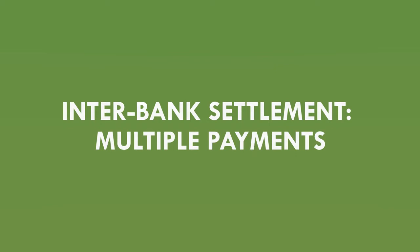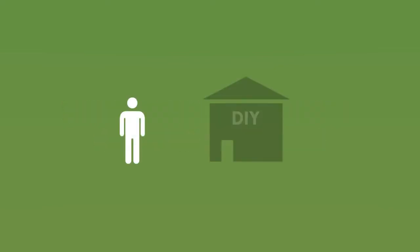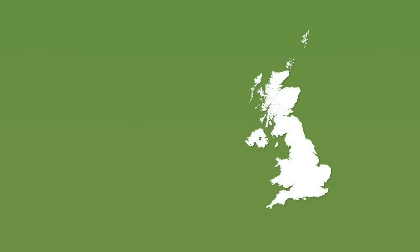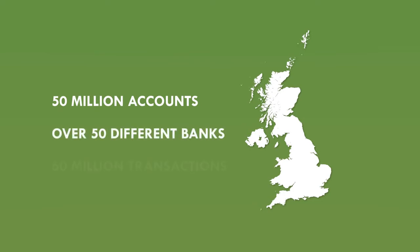That was a simple example involving just one payment between two bank customers with only two banks. But in the UK right now, there are around 50 million people with bank accounts. Some make more than one electronic payment a day and they bank with over 50 different banks. Every day, over 60 million transactions are made between bank accounts through payment systems including Visa, Mastercard, direct debit, and online bank transfers. If banks had to go through the whole settlement process every time someone bought a sandwich with their debit card, it would get very messy very quickly. But there's a clever way of simplifying the whole thing massively — it's called multilateral net settlement.